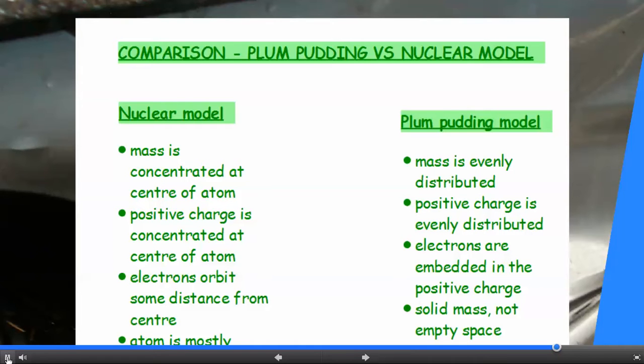In the nuclear model, electrons orbit some distance from the centre, whereas in the plum pudding model, the electrons are embedded in the positive charge. And in the nuclear model the atom is mostly empty space whereas in the plum pudding model it's a solid mass with no empty space.